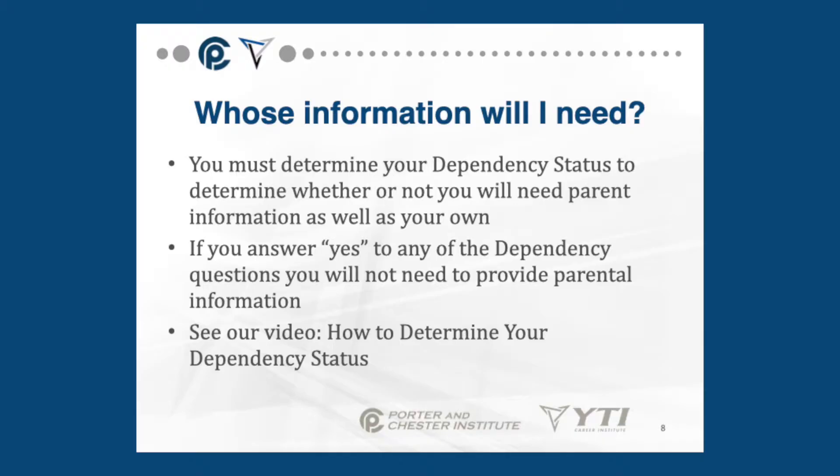Next, you will need to determine whose information needs to go onto your FAFSA. To do so, you must determine your dependency status to see whether or not you will need parental information as well as your own. There are a series of dependency questions on the FAFSA. If you answer yes to any of them, you will not need to provide parental information. For greater detail about this section of the FAFSA, please refer to our video, 'How to Determine Your Dependency Status.'